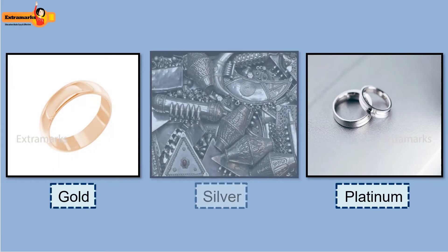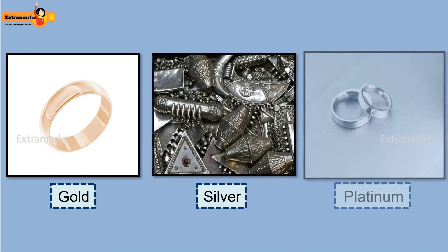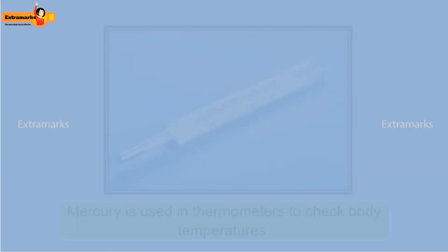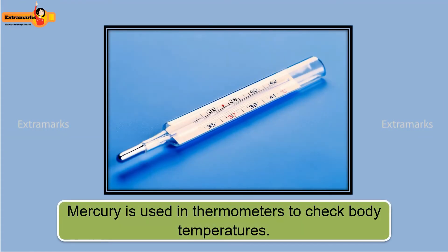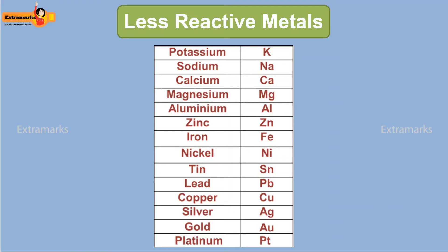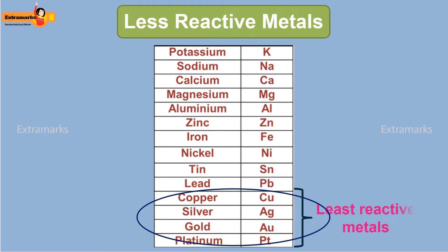Gold, silver and platinum have been used to make ornaments and jewellery for thousands of years. Mercury is used in thermometers to check body temperatures. Copper is used for making electrical wires that are widely used domestically as well as industrially. Metals such as copper, silver, gold and platinum are the least reactive metals present at the bottom of the reactivity series.